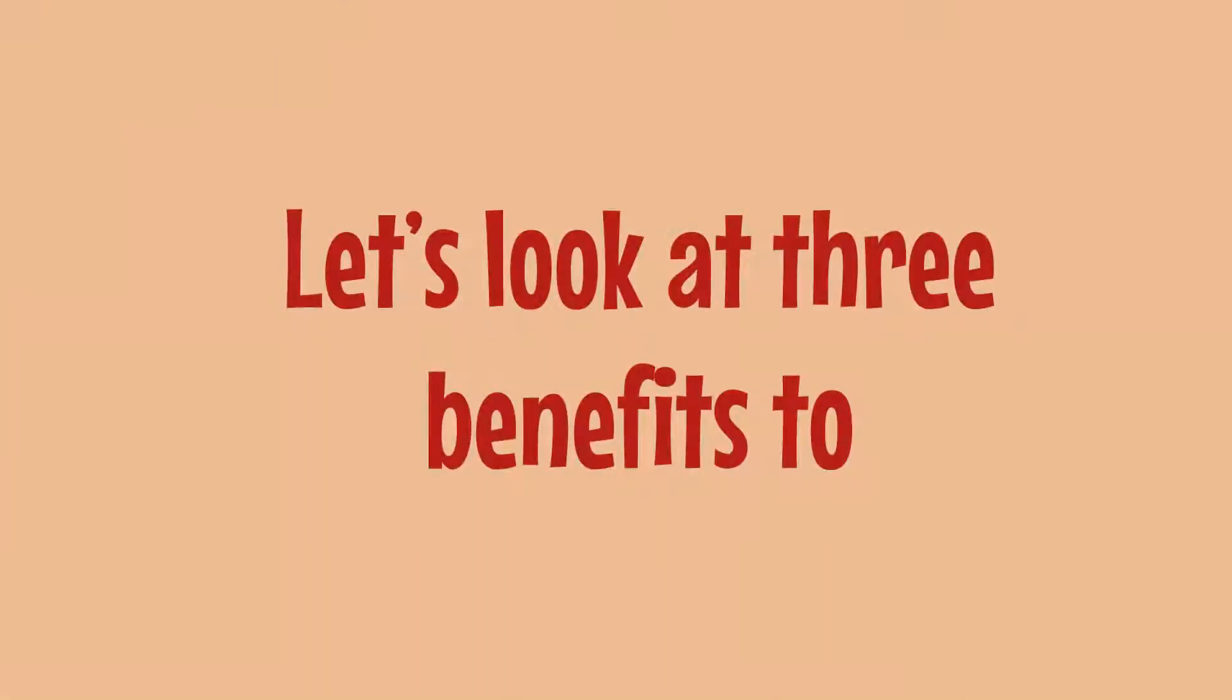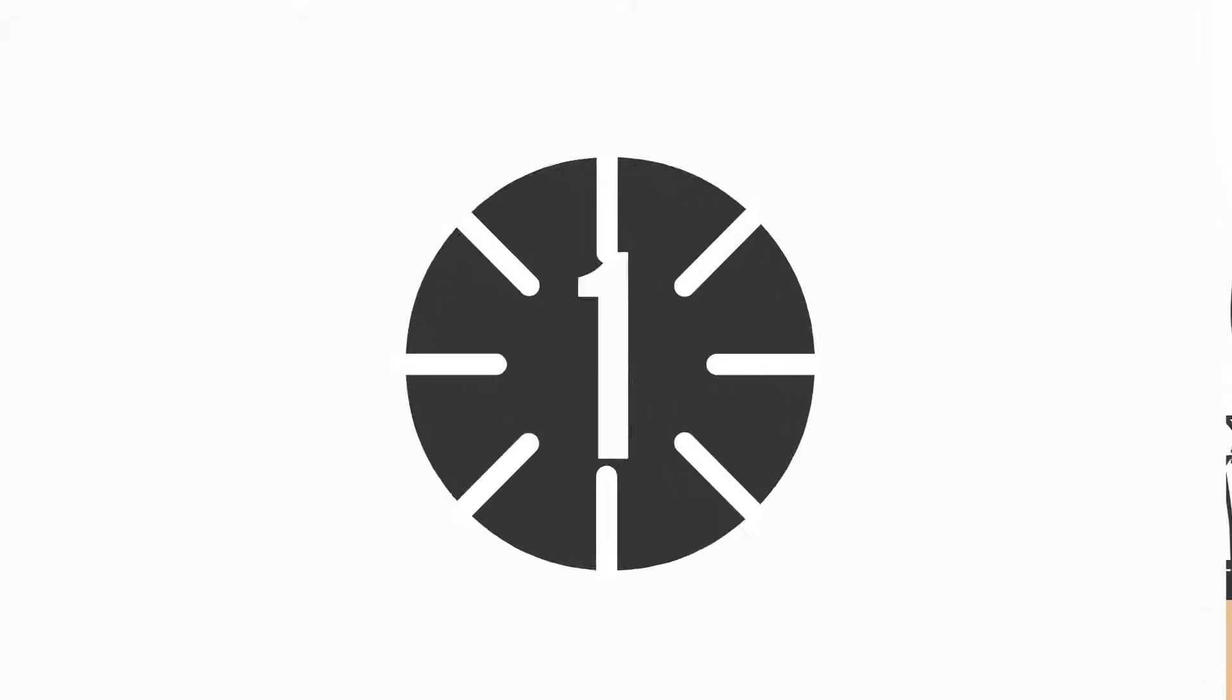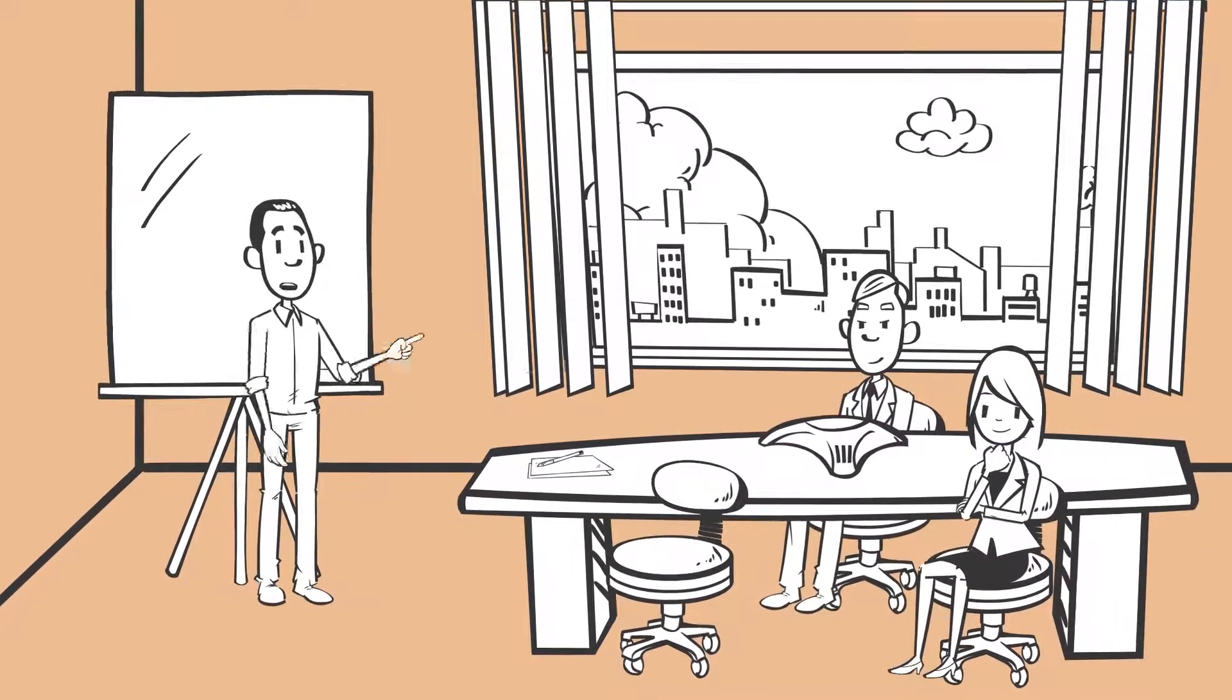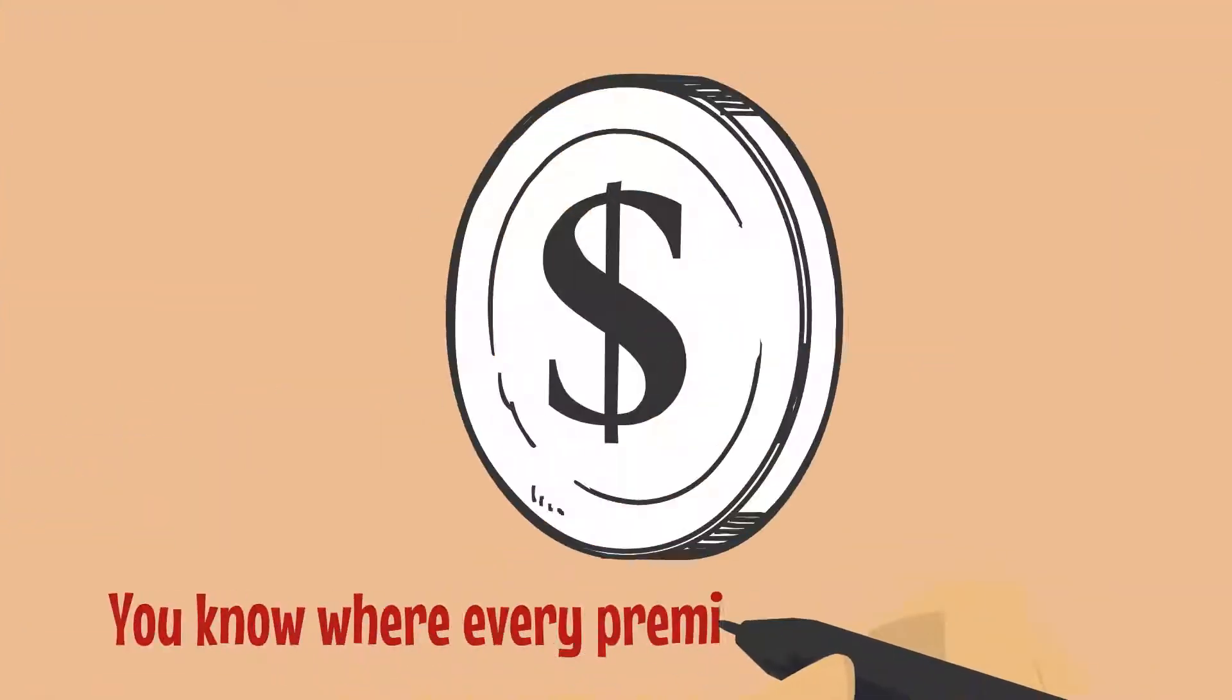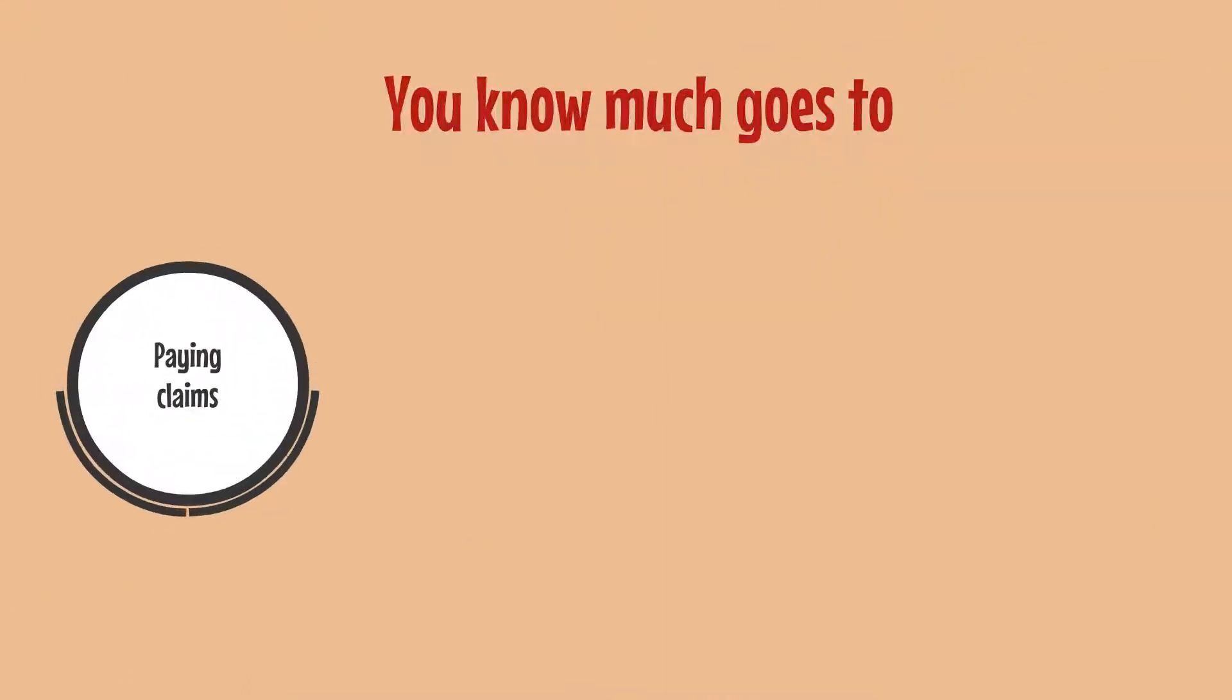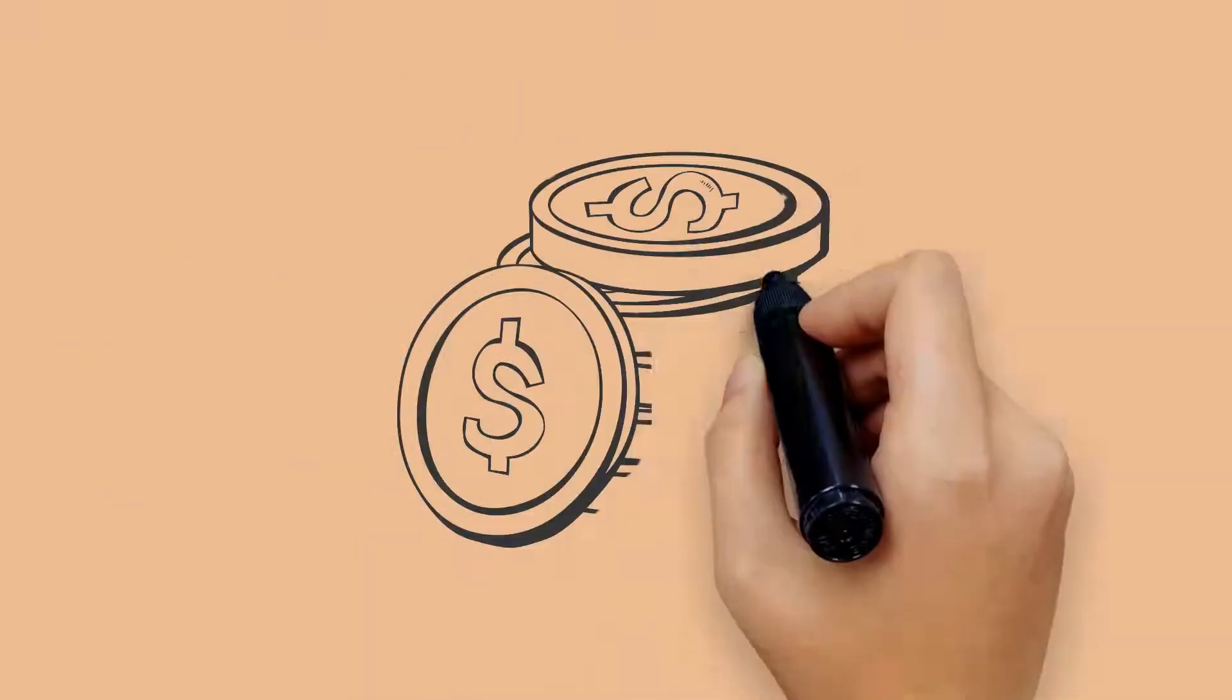Let's look at three benefits to member-owned group captives compared to standard insurance. First, since you are an owner in the insurance company, there is complete transparency. You know where every premium dollar is spent. You know how much goes to paying claims, issuing the policies, buying reinsurance, managing claims, etc. Every penny is accounted for.